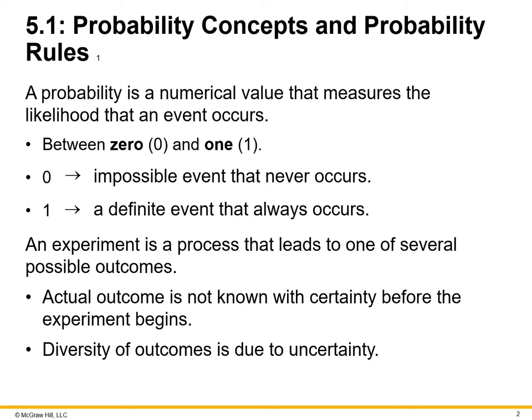A probability is a numerical value that measures the likelihood that an event occurs. It's usually between zero and one. Zero is an impossible event that never occurs, or one is a definite event that always occurs. If you think about it this way, zero between zero and one, and you look at decimal points, it's the percentage of possibility. One being 100% of the time, zero meaning 0% or never, and usually you end up with some type of percent that the percent of the time something's going to occur.